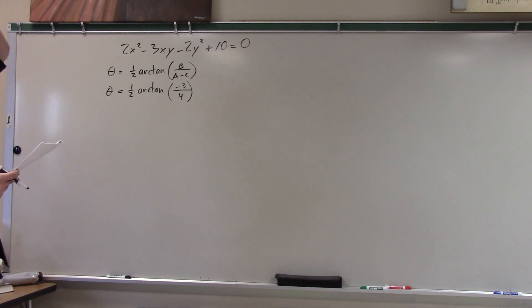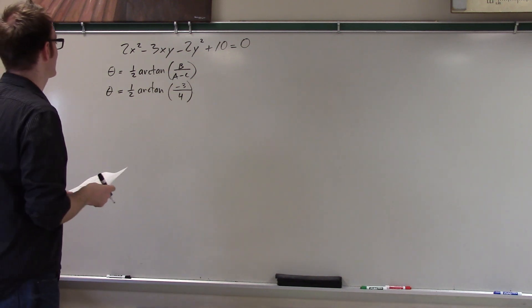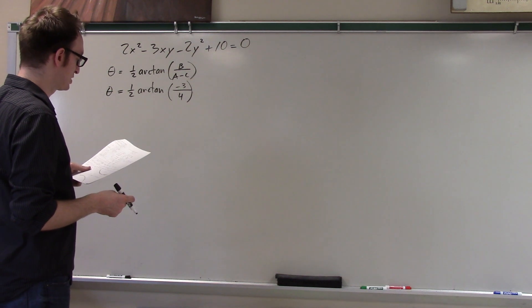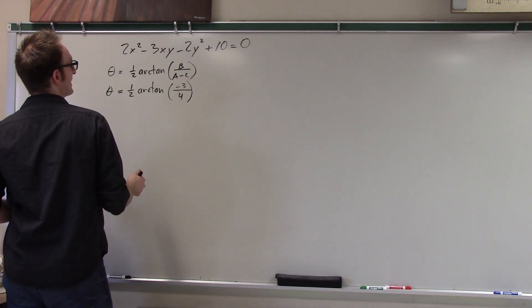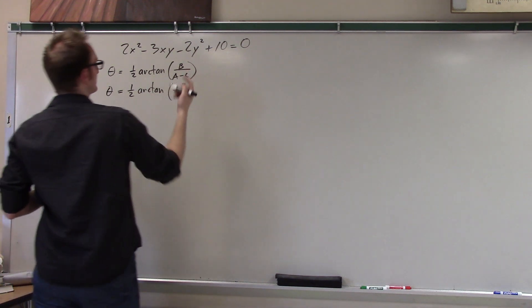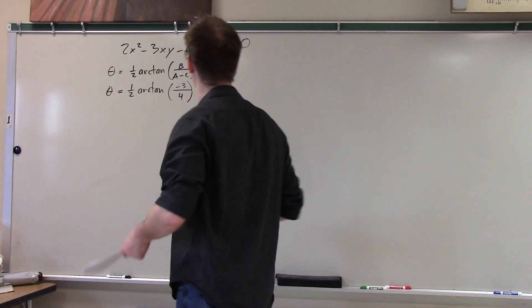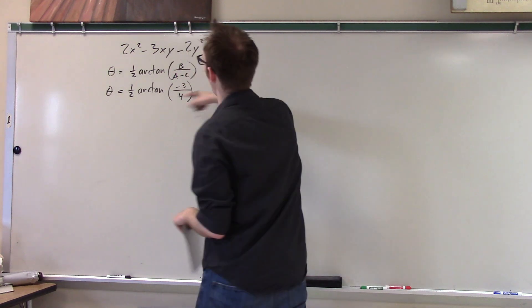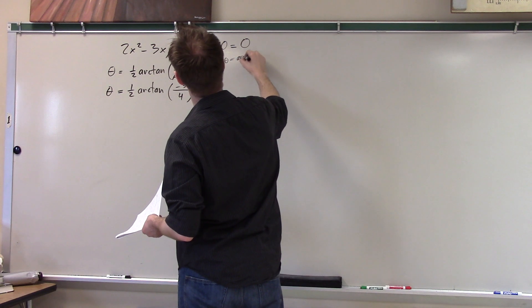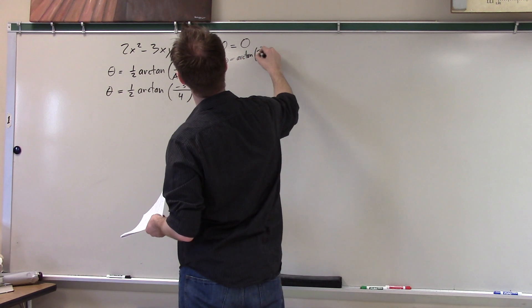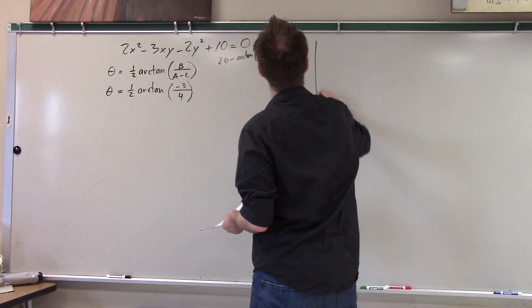So what is theta it's one half arc tan b is negative three over a minus c so that's like two minus negative two so that's four okay. Oh this one's kind of annoying right now the angle that I'm rotating is arc tan one half arc tan negative three fourths all right so I think the simplest way to do this is to well okay so what we're going to do is we're going to make a picture of arc tan that we have to use like half angle formulas and crap now that's the only way.